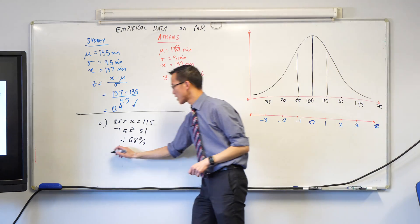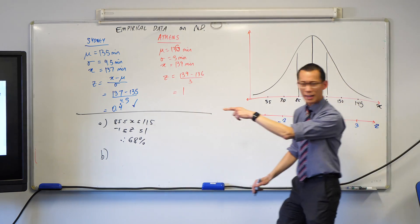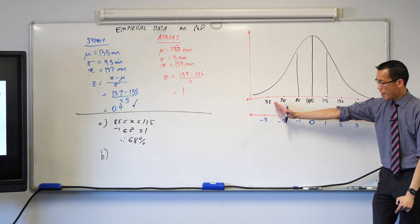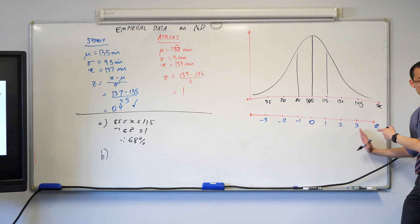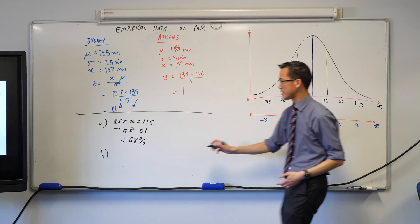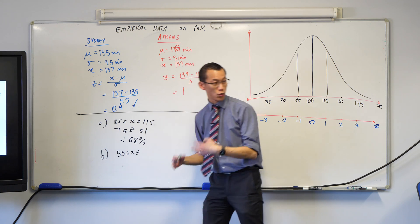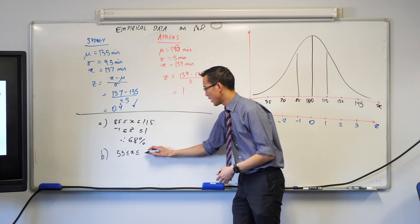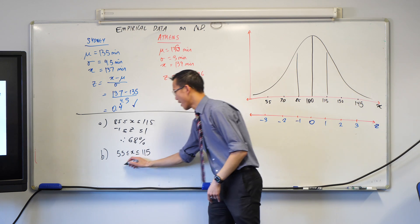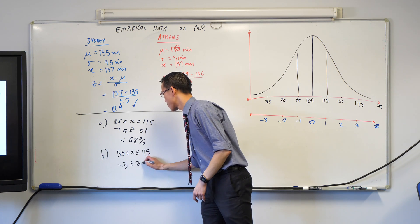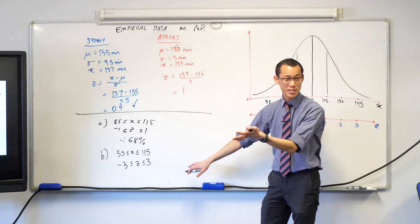How about part B? 99.7. Good — 55 is all the way down here, three standard deviations below, and three standard deviations above. So if your x, your raw score, is between these values, the corresponding z-scores are from negative three to three. That's 99.7%.